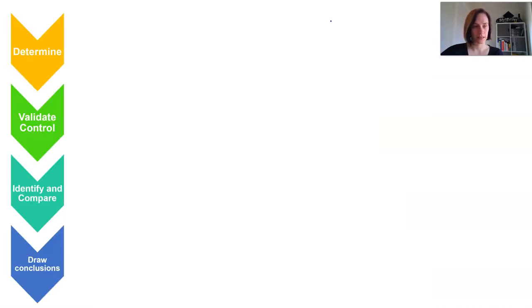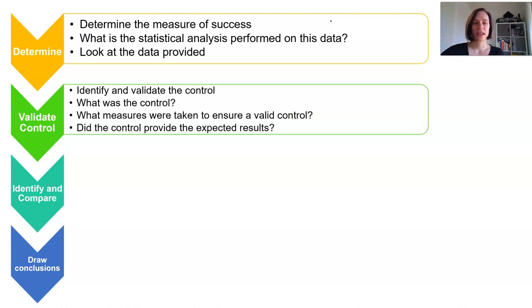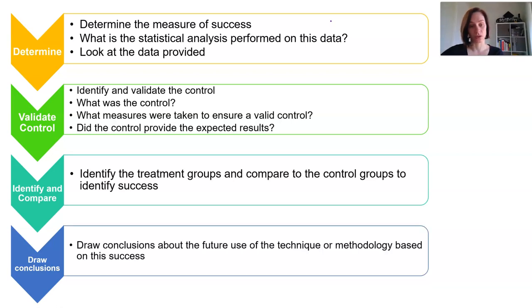So let's explore this a little bit deeper. First, determining that measure of success. What is the statistical analysis performed on this data? You have to understand your data before you even start. You've got to identify and validate the control. Find that control sample. How did it do? Is it meeting the criteria of success that we think we need to do? Identify your treatment groups then and compare it to that control group, and then come to some conclusions. That's what we're doing—appraising to see if our technology is successful.